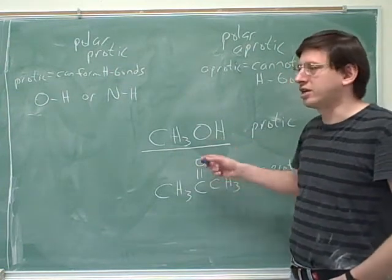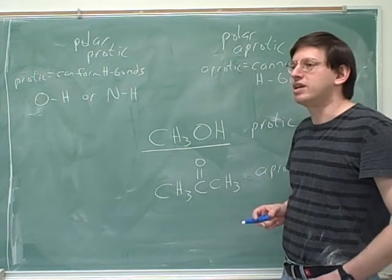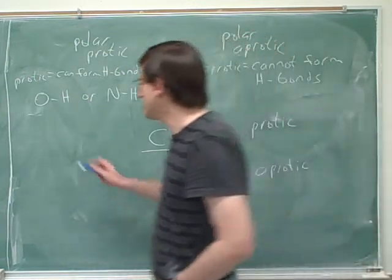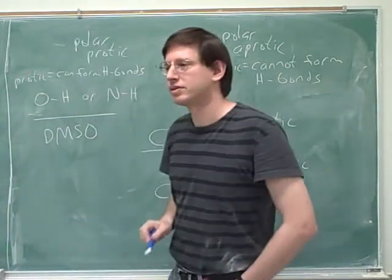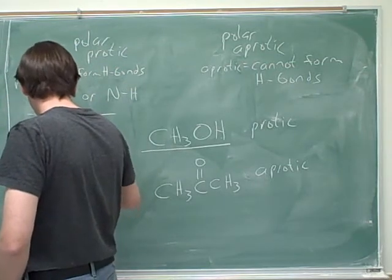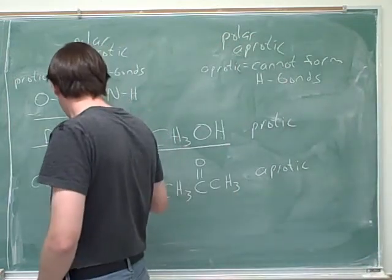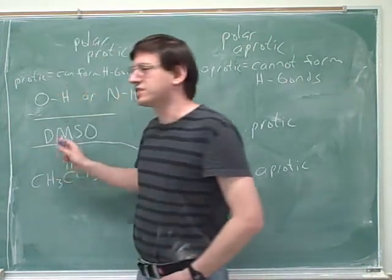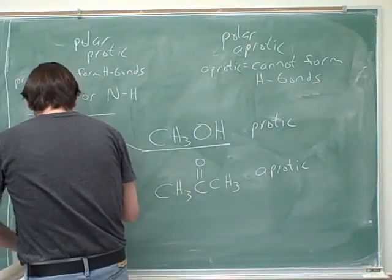So you should be able to look at a picture and tell whether it's protic or aprotic. However, sometimes they're just going to give you the name. The names that you're likely to see, one name you're very likely to see is DMSO. We saw it already. And acetone? Well, this is acetone over here. But yeah, you might see that.